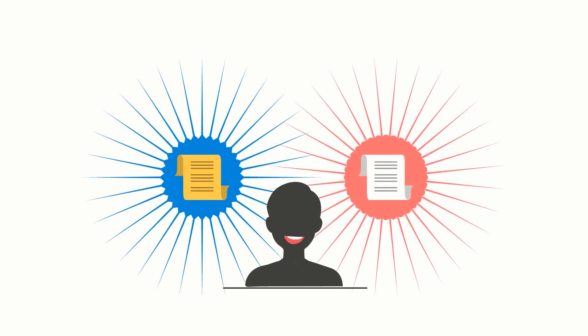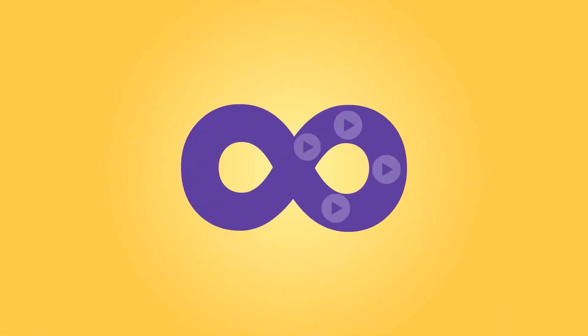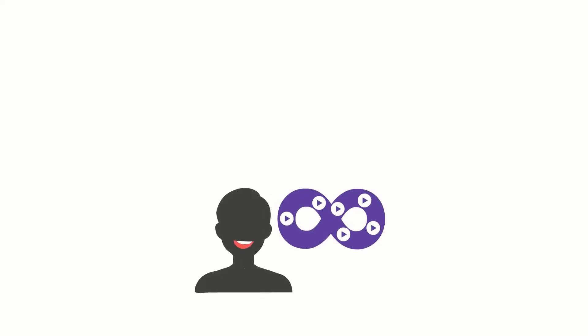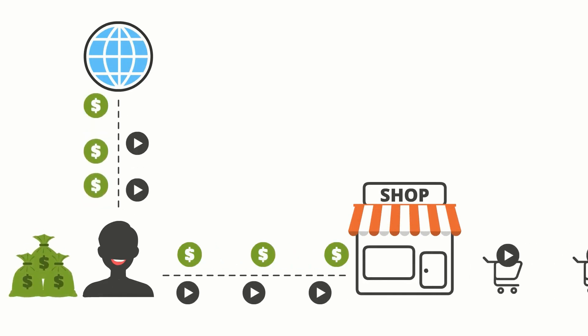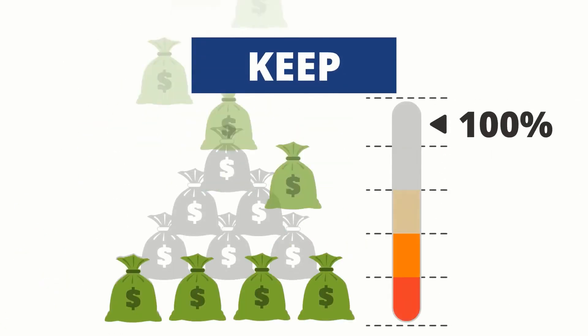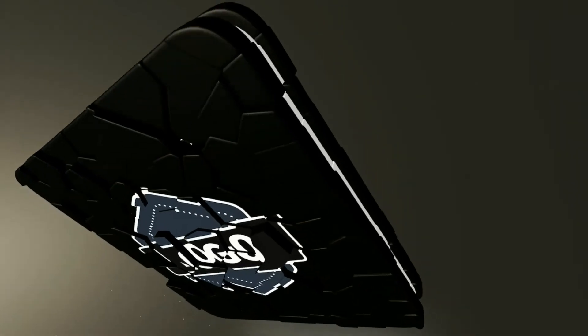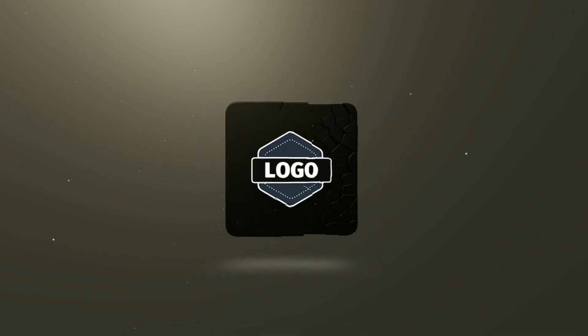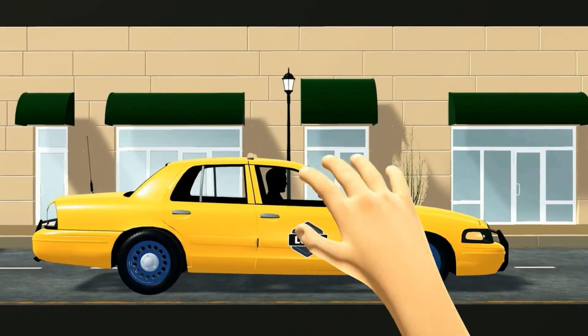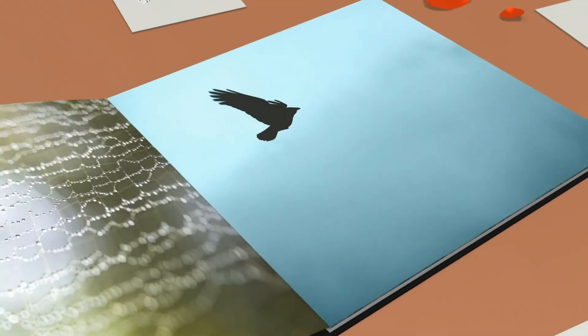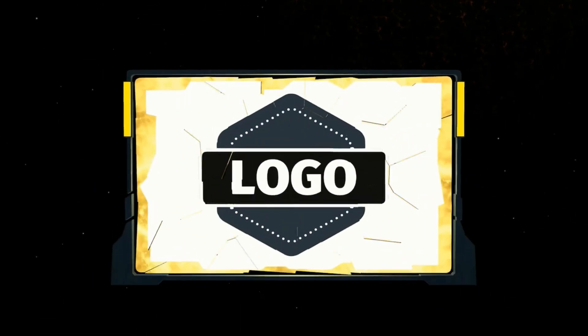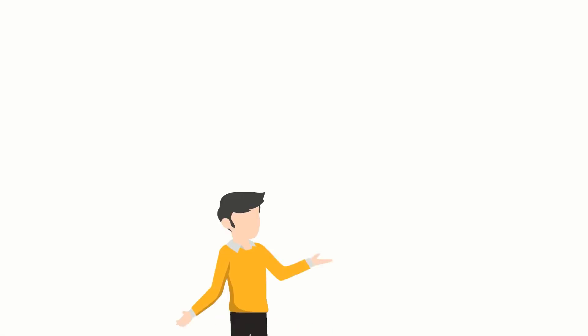With two amazing license options, you can take any video and animate it in three simple steps. Select a personal license and create as many video animations as you want, or get the popular commercial license to create videos for yourself and sell them to potential clients, keeping 100% of the profits. There are no restrictions, no experience or technical skills necessary, and you can sell these video animations to clients and start profiting hundreds of dollars.